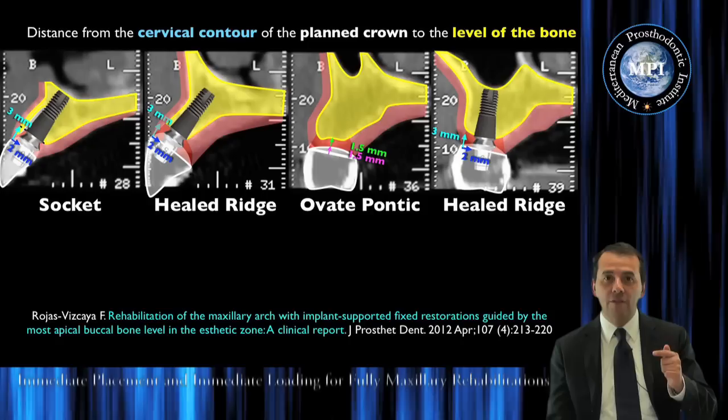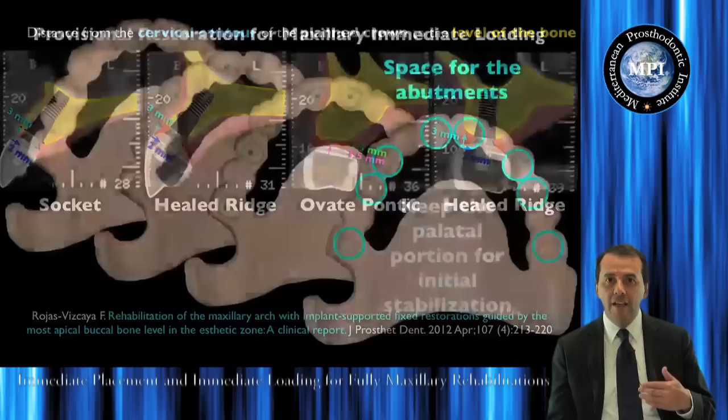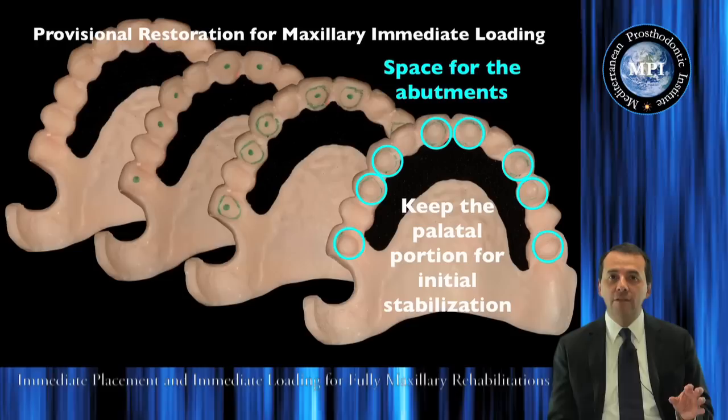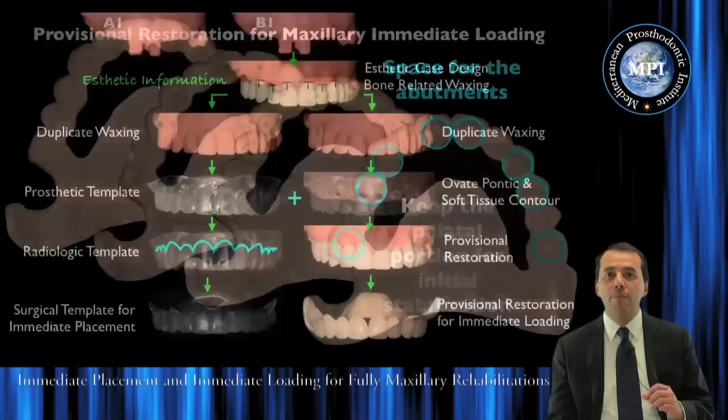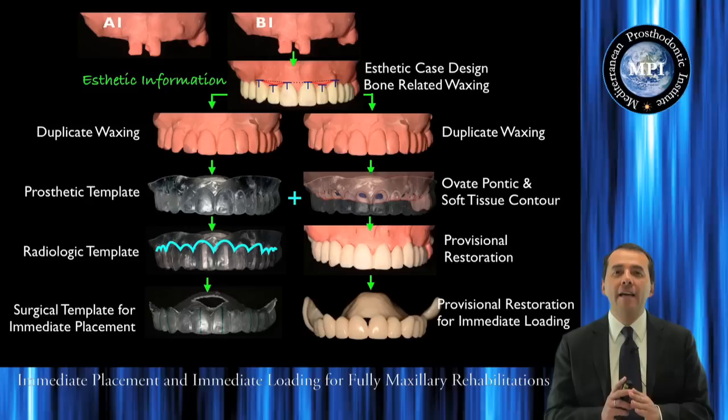We will see what happens when the bone is very close to the crown — if we need to reduce bone or we need to add bone. We will also see, step-by-step, all the process of the provisional restoration, and how we create and transfer the static information from the model to the provisional, and from the provisional to the patient.